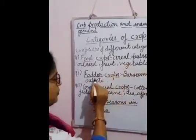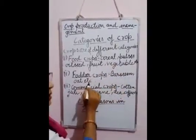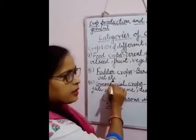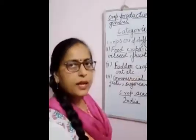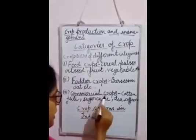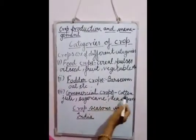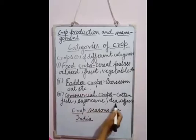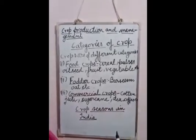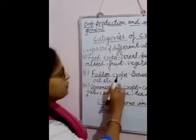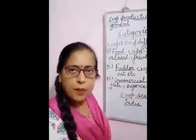Then come to the fodder crops — versile and oat, etc. — and these are used for cattle. Now the commercial crops include jute, cotton, sugarcane, tea, coffee, etc., and these crops are used for commercial purposes.